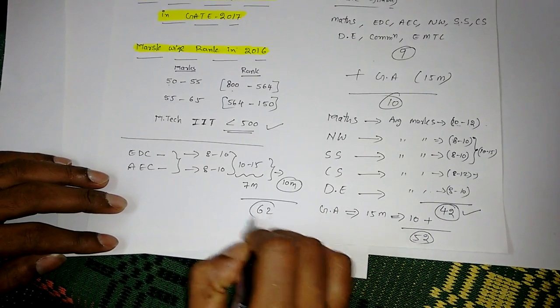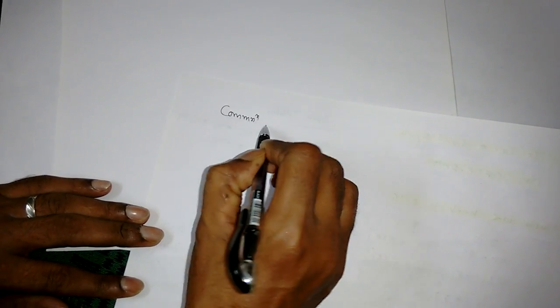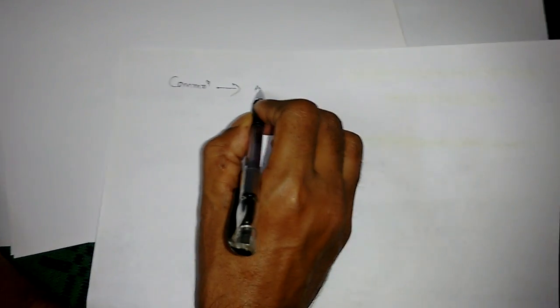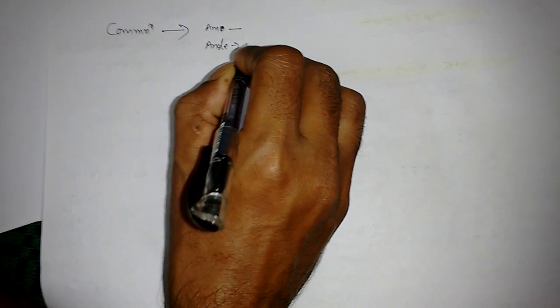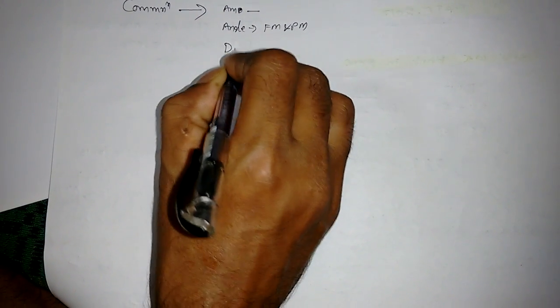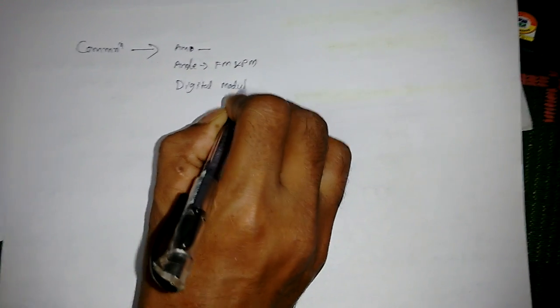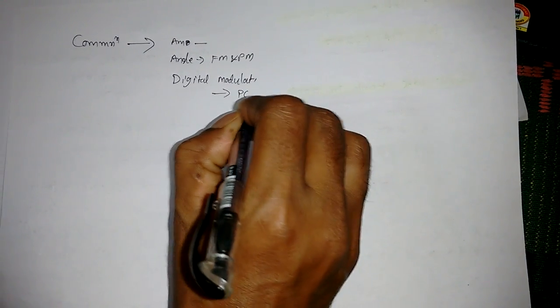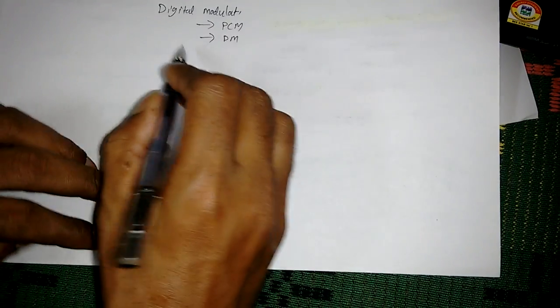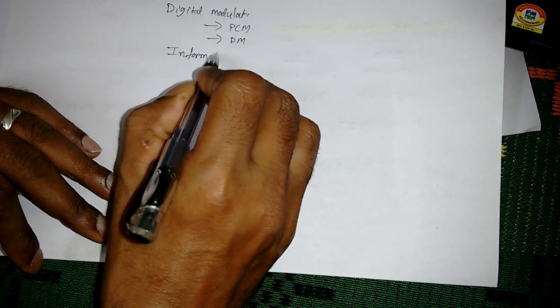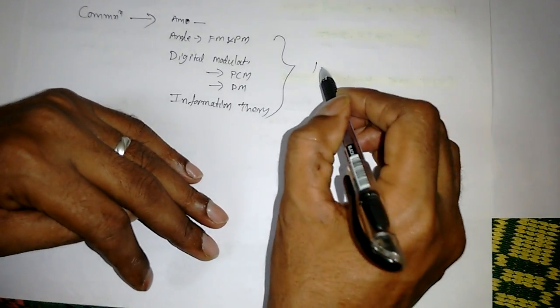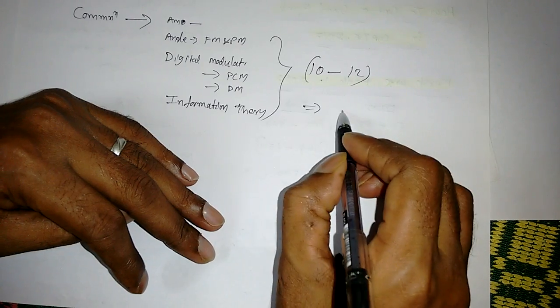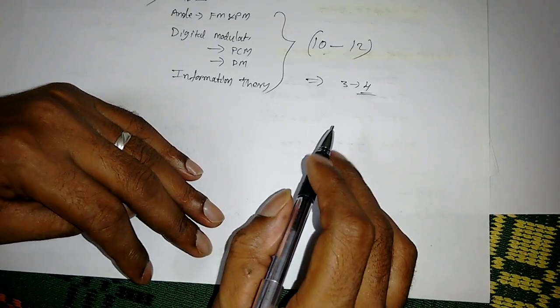The other two remaining are Communication and EMTL. For Communication, if you simply learn the basics like amplitude modulation (AM), angle modulation (FM and PM), and some basics about digital modulation techniques like PCM and Delta modulation, and then simple theory like information theory - how to find the channel bandwidth, etc. This is a main subject where you can get 10 to 12 marks average. If you get at least 3 to 4 marks from this, that will be beneficial to get a lower rank.